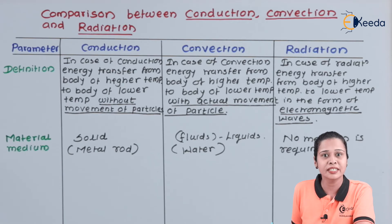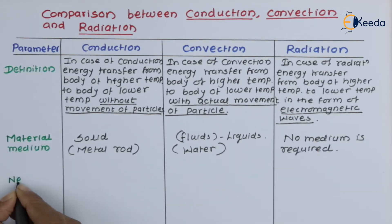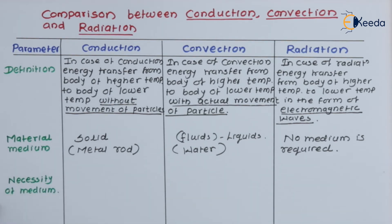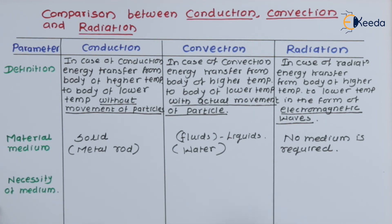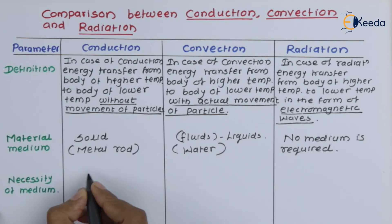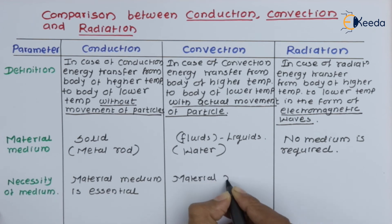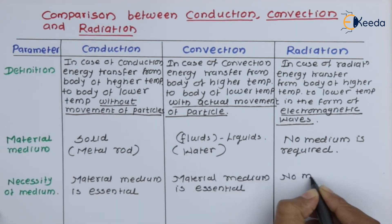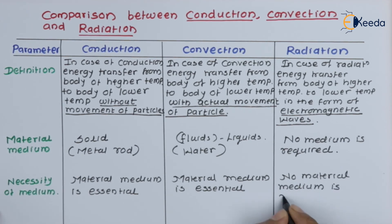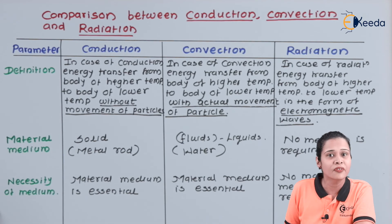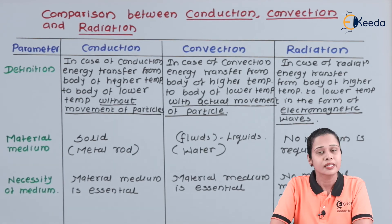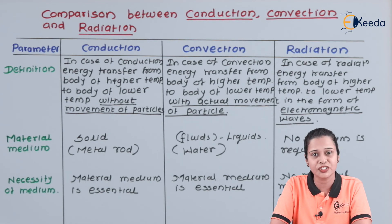The third point is the necessity of the medium. In case of conduction, the medium is essential. In case of convection also, the medium is essential. But in case of radiation, there is no requirement for a medium — this can happen in vacuum also. These are the important factors for the comparison of conduction, convection and radiation.